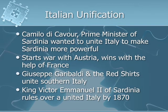Italian unification was led by Camillo de Cavour, the Prime Minister of Sardinia, who wanted to unite Italy and make Sardinia more powerful. He started a war with Austria and won with the help of France. In Southern Italy, Giuseppe Garibaldi and the Red Shirts were uniting the south, and Cavour convinced Garibaldi to support King Victor Emmanuel II of Sardinia as the leader of a united Italy by 1870.